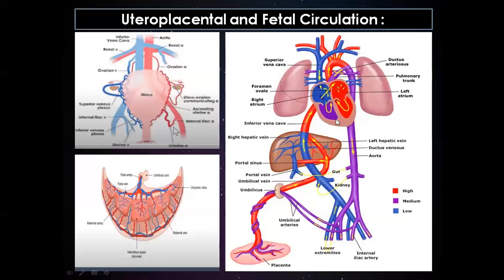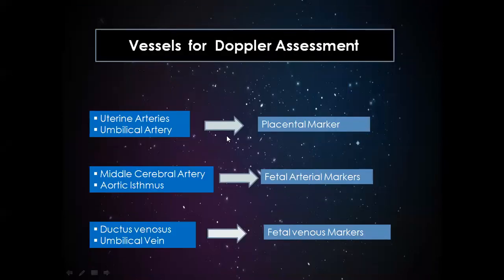Deoxygenated blood from the rest of the body accumulates in the right atrium, passes to the pulmonary trunk, and through the ductus arteriosus it mixes with the aorta, becoming mixed-oxygenated blood. This mixed blood returns to the mother through the umbilical arteries. Among these vessels, uterine artery and umbilical artery are placental markers; middle cerebral artery and aortic isthmus are fetal arterial markers; and ductus venosus and umbilical vein are fetal venous markers.